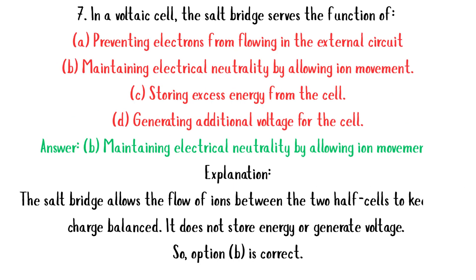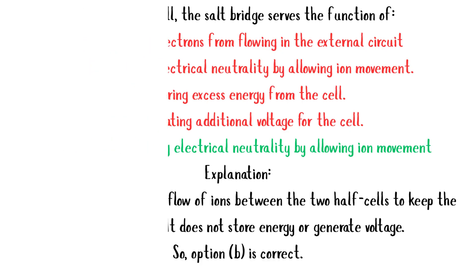MCQ 7: In a voltaic cell, the salt bridge serves the function of — A. Preventing electrons from flowing in the external circuit. B. Maintaining electrical neutrality by allowing ion movement. C. Storing excess energy from the cell. D. Generating additional voltage for the cell. Answer: B. Explanation: The salt bridge allows the flow of ions between the two half cells to keep the charge balanced. It does not store energy or generate voltage. So option B is correct.